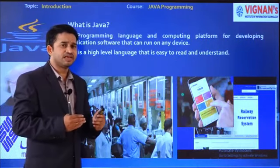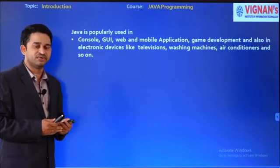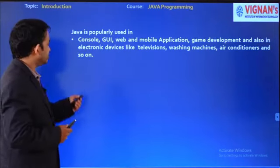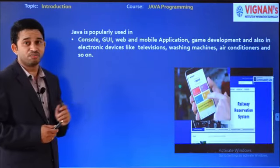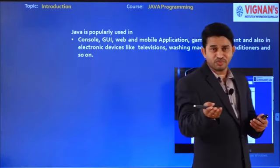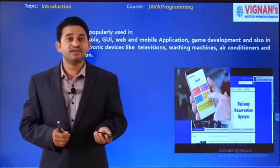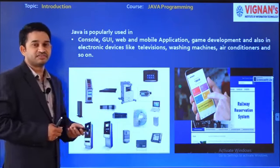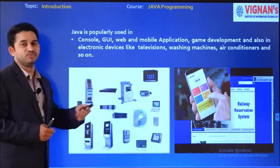Where do we apply Java programming language? Java is applied in console applications, GUI, web applications, and game development. Java is not only for computer-based applications — we can use it for mobile apps, game development, and also for electronic devices like ACs, washing machines, and televisions.